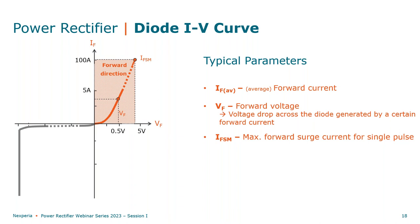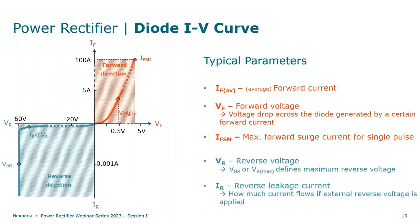Here are some typical parameters linked to the characteristic curve. First, the forward current — the current flowing through the diode. Then VF — the voltage drop across the diode at a certain applied forward current. We also have the IFSM rating, which indicates the maximum forward surge current in a single pulse event — the parameter to check when the diode must withstand an inrush current. In the reverse direction, Juan already mentioned reverse leakage current, which shows how much current still flows in blocking mode when an external voltage is applied. The breakdown voltage or maximum reverse voltage indicates the maximum voltage that can safely be applied to the diode.